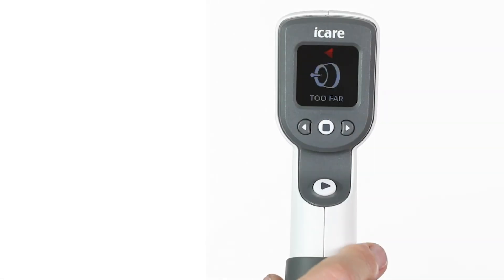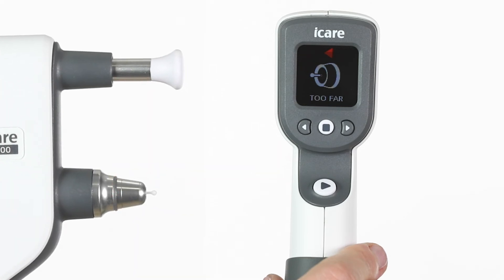Error Messages. If there is an error when taking a measurement, the tonometer will beep twice, display the error message, and the probe base will flash red.